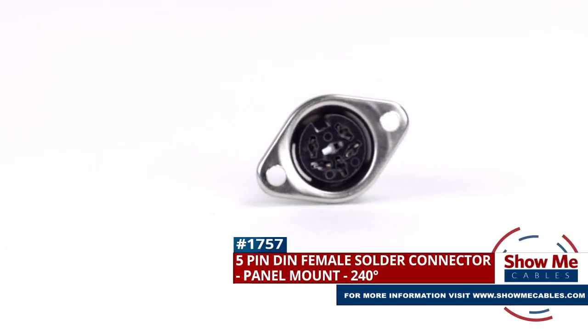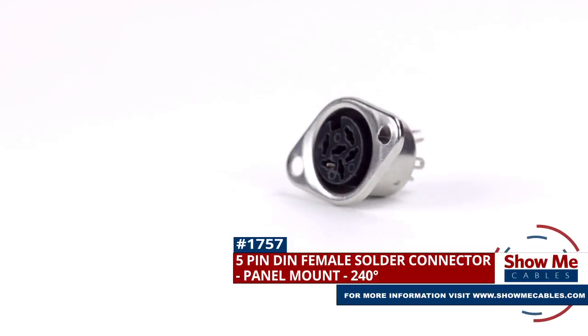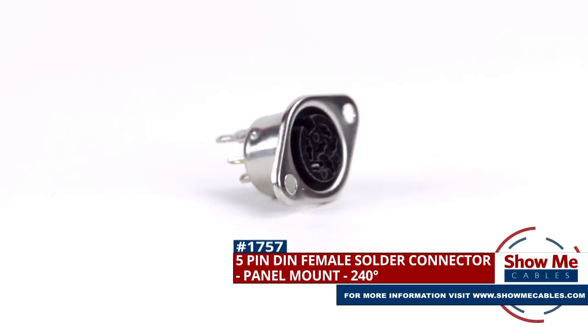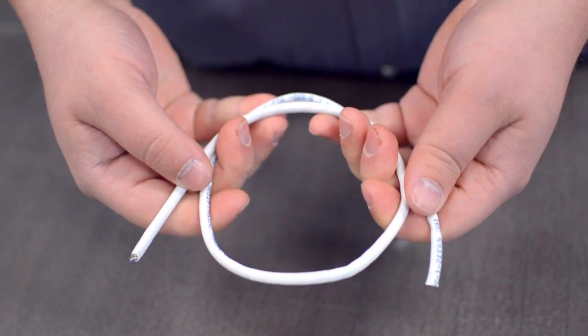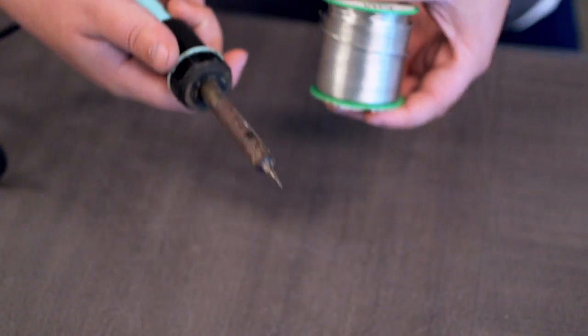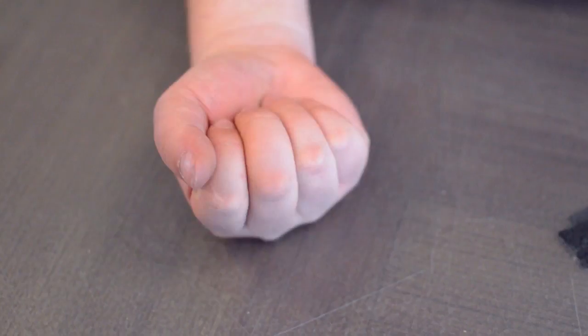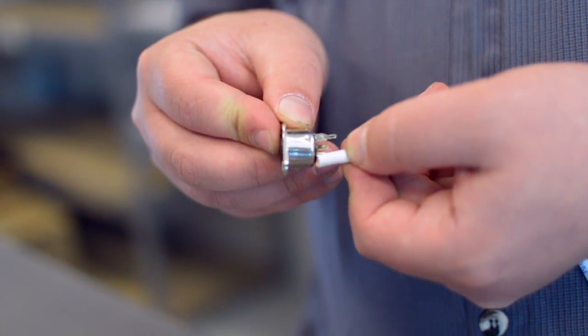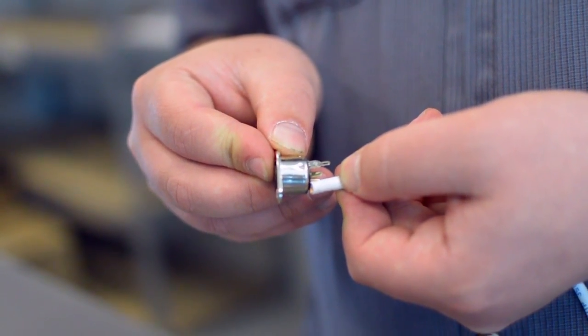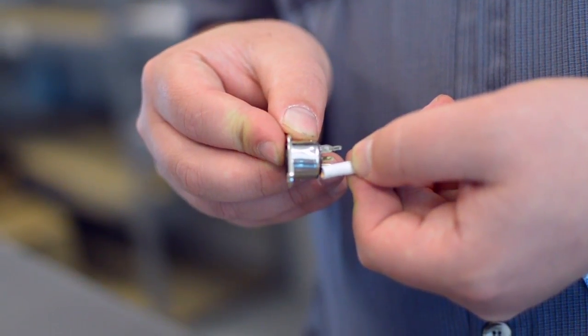This is the 5-pin female panel mount solder connector. To install, you will need the following items: low voltage cable, wire strippers, solder and soldering iron, and the DIN connector. Measure how far you will need to strip back the jacket by holding the cable up against the base of the connector.